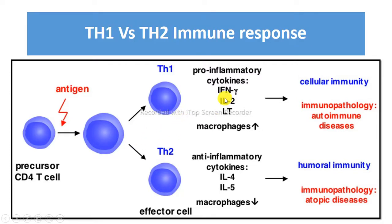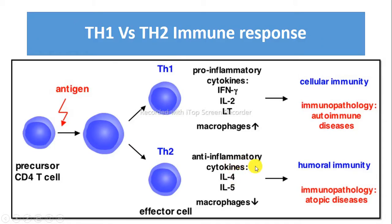Th1 cells produce a pro-inflammatory response and perpetuate autoimmune responses, whereas Th2 cells promote IgE and eosinophilic responses in atopy and produce anti-inflammatory properties or responses.